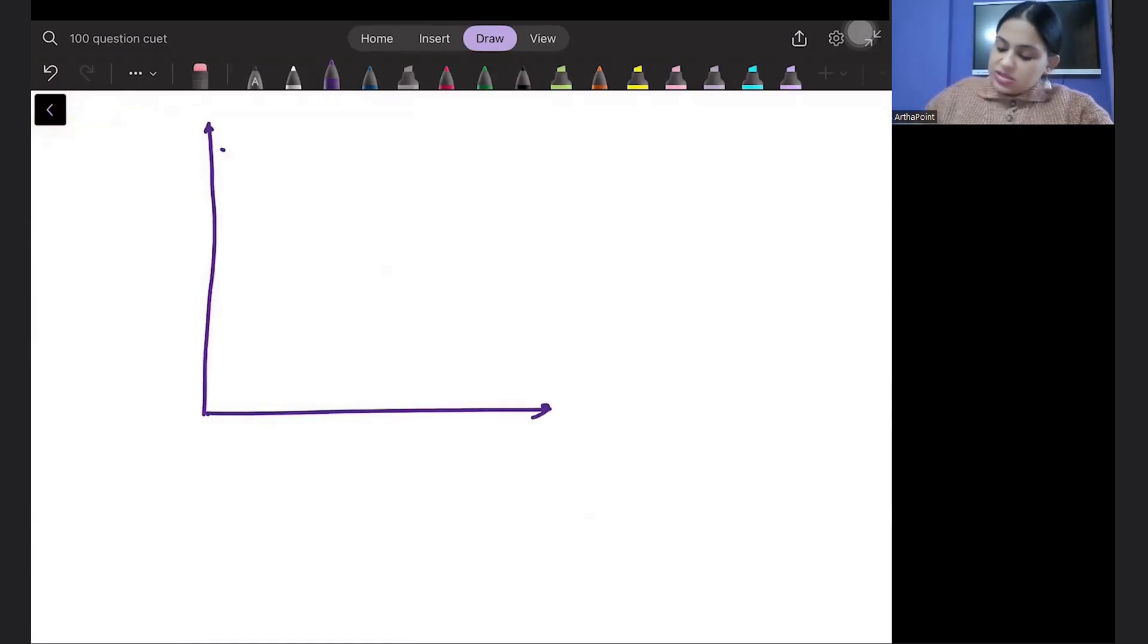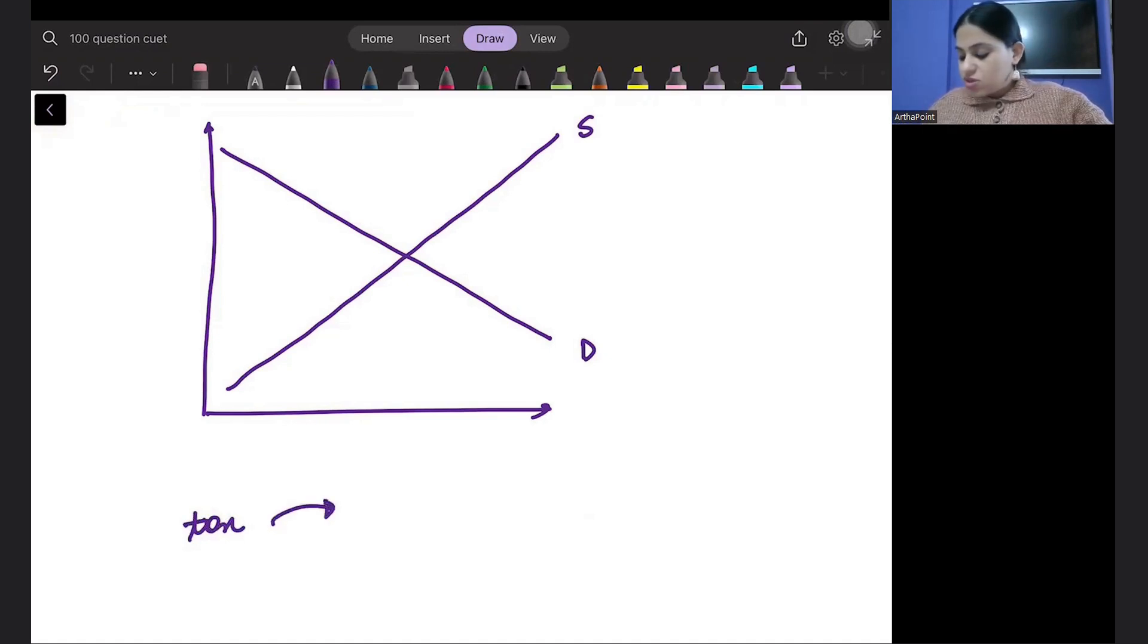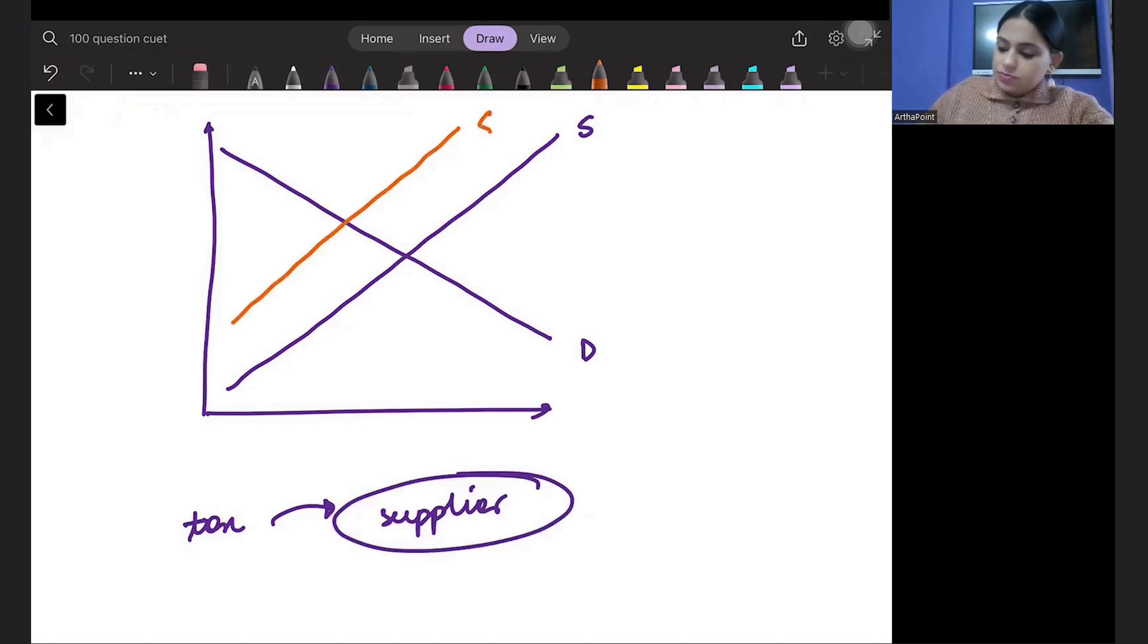This is demand, supply. Whenever a tax is imposed, imposition or incidence are different. So suppose I impose a tax on supplier. This tax will reduce the supply. New equilibrium is at point E dash. Initially my equilibrium point was at E. And my new equilibrium point will be at E dash. Is that clear?